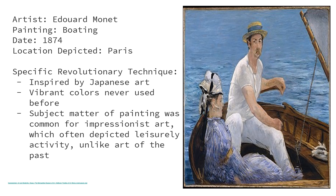It was produced in 1874, and the location depicted in the painting is Paris. The specific revolutionary techniques seen in this painting are: first, it was inspired by Japanese art, so Manet was not only sourcing inspiration from European art but reaching out to different corners of the globe. Second, there are vibrant colors that were never used before — typically paintings had been more subtle, subdued, and darker. In the Impressionism era, the paintings were vivid and bright, as we see in this painting. The subject matter was also common for Impressionistic art, which often depicted leisurely activity, unlike art of the past.